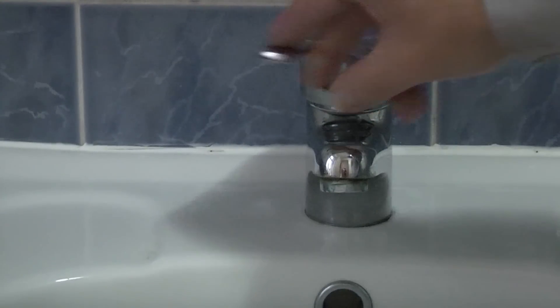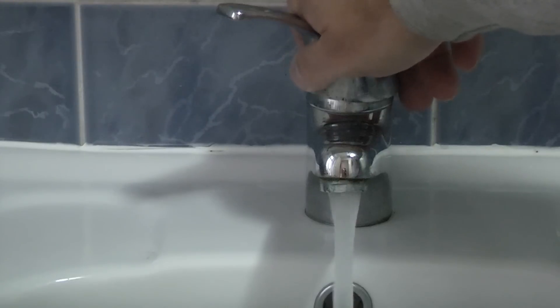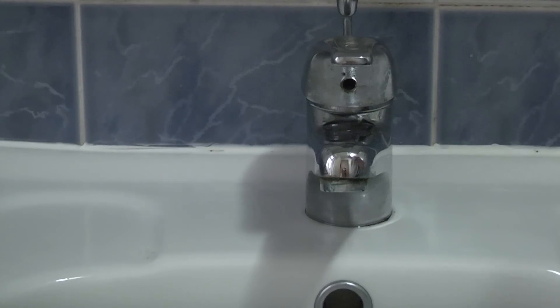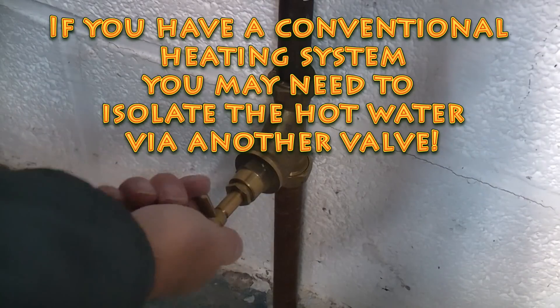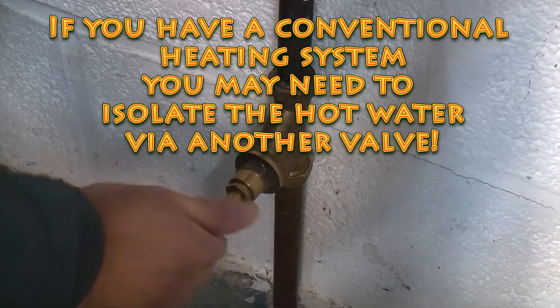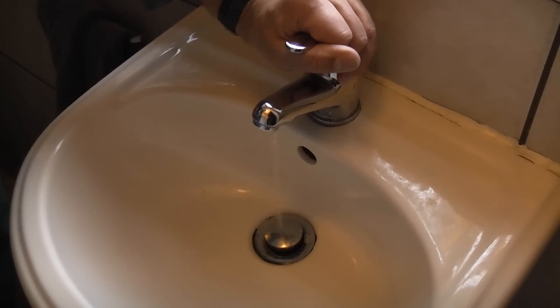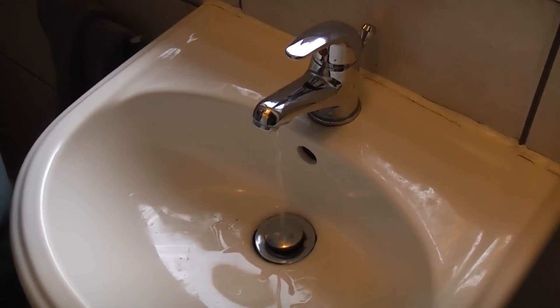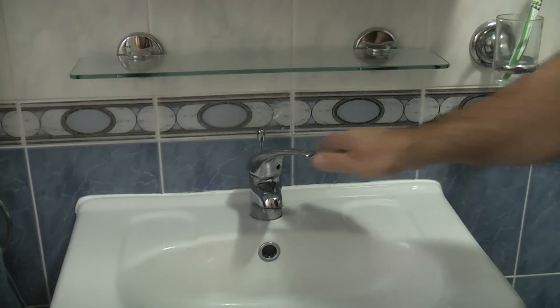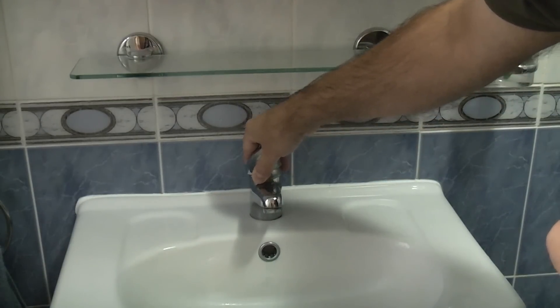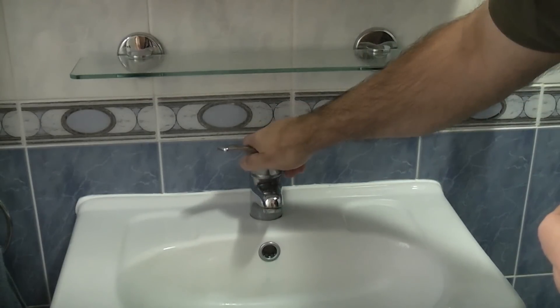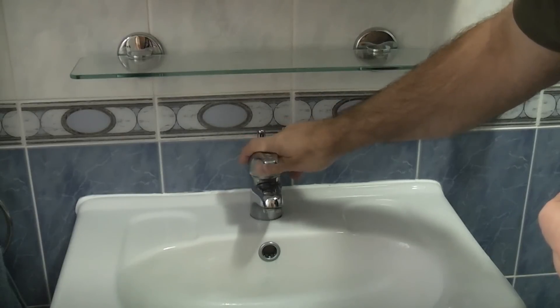So the first thing we need to do is isolate the water, and in this property we have a combination boiler so it's very simple we just need to close the main incoming stop tap. And once that's fully closed I'm then going to open a downstairs tap and that will drain out any water from the system. So the water has now been isolated. If we operate the tap you can see that nothing at all is coming out of there.